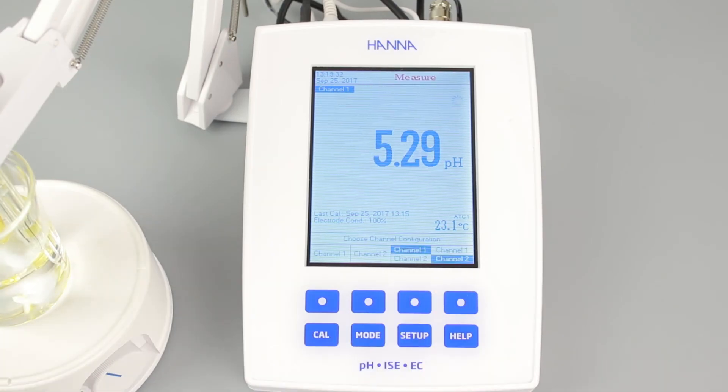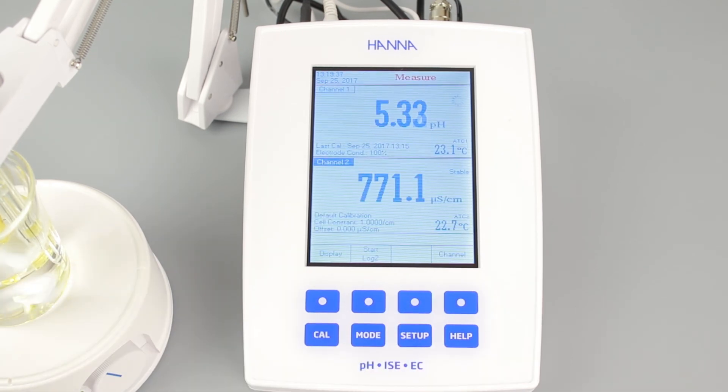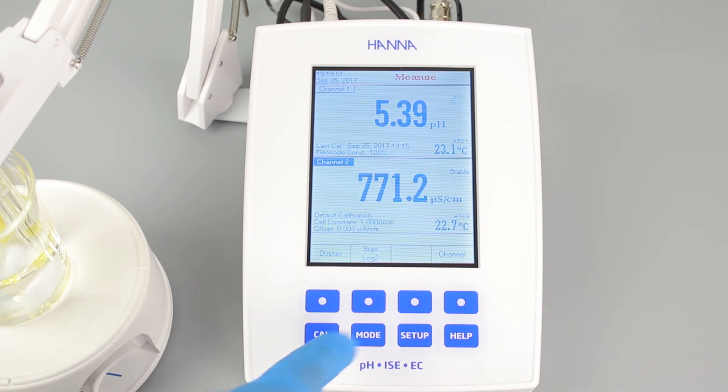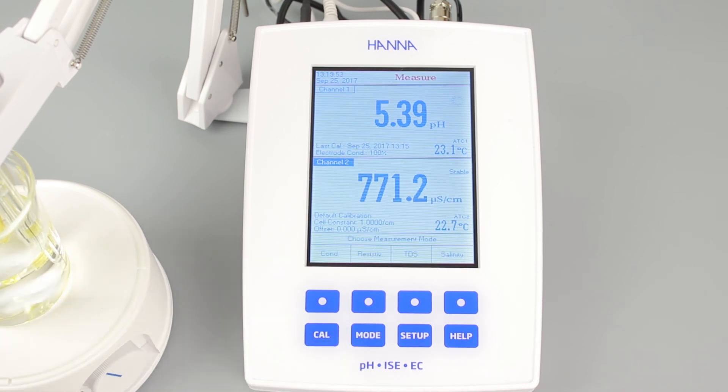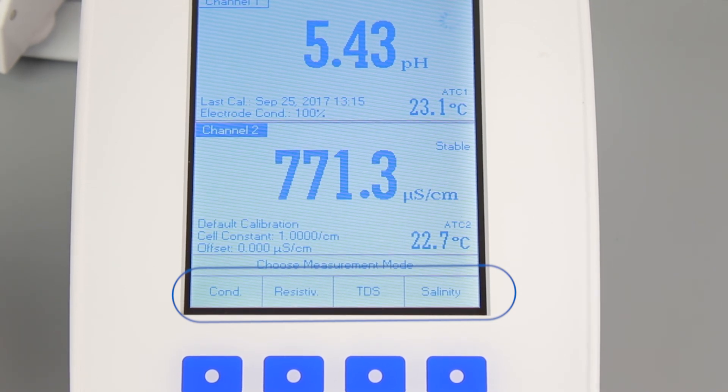Pressing channel and then one of the dual-level display buttons will let you see both readings at once. When viewing EC in two-channel mode, press MODE again to switch between conductivity, resistivity, TDS, and salinity.